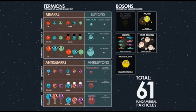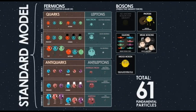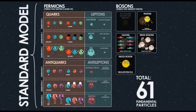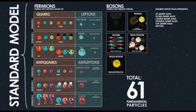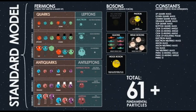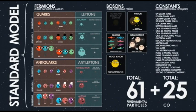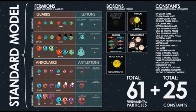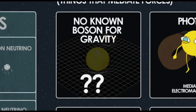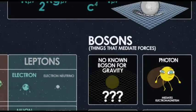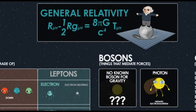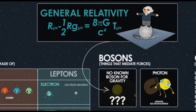We do have a good theory that explains how these 61 particles behave — it's called the Standard Model of particle physics. But the Standard Model is still pretty messy: it has 61 particles and about 20-something numbers you have to plug in that you just have to get from experiment. And we still haven't fitted gravity in — we have Einstein's theory of general relativity, but no one has been able to unify it with the Standard Model.